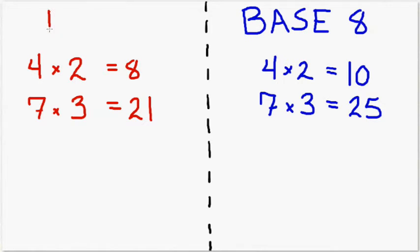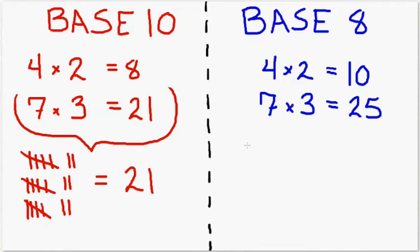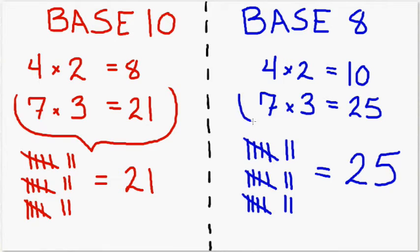What we did by banishing 8 and 9 is change our base 10 number system into a base 8 number system, and all it changes is the labels. If I calculate 7 times 3 in base 8, and you calculate it in base 10, you will say the answer is 21 and I will say the answer is 25, but we will both be talking about the same quantity.